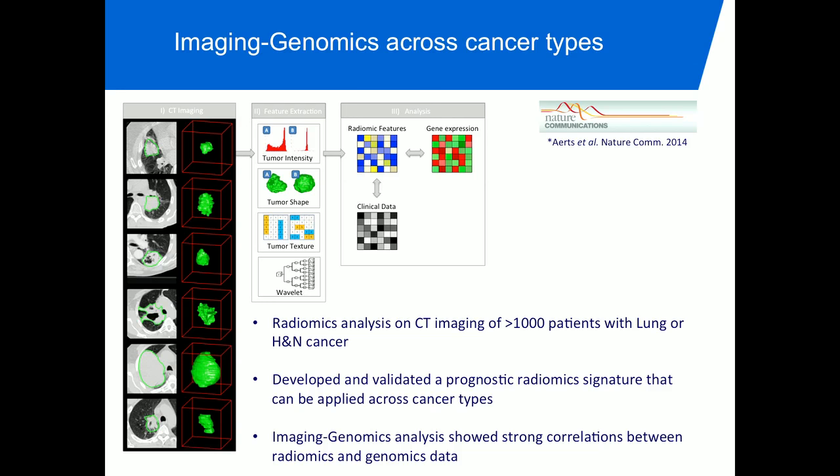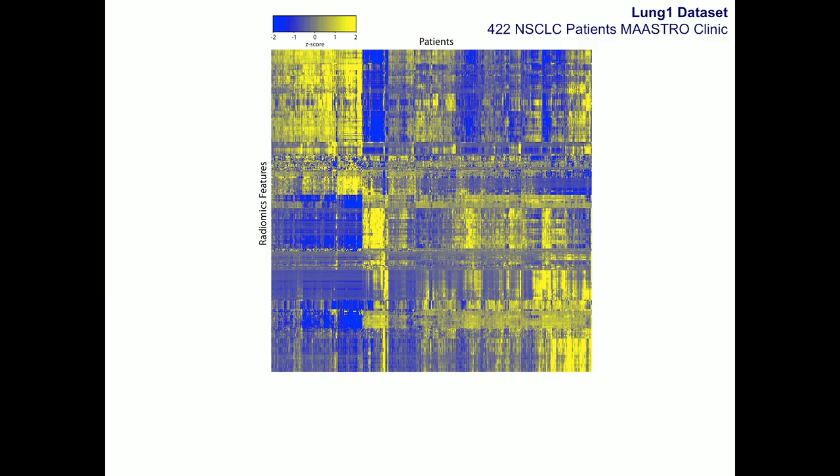We developed a prognostic signature to see if we could predict patient survival using this data — a very clinical question. We also asked: can we apply this across different cancer types? By doing so, we can identify if there is a general radiomic phenotype that is prognostic in both lung and head-and-neck cancer. For training, we used a dataset of 422 non-small-cell lung cancer patients treated at Maastricht clinic in the Netherlands.